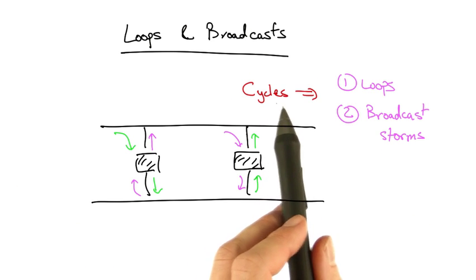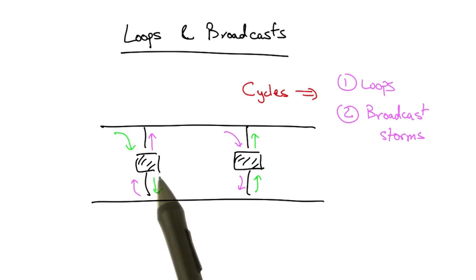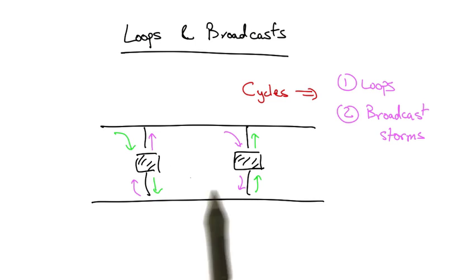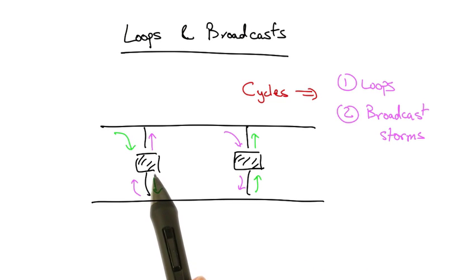So cycles in the underlying physical topology can create the potential for learning switches to introduce forwarding loops and broadcast storms.